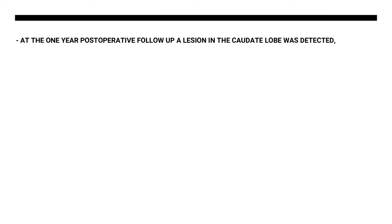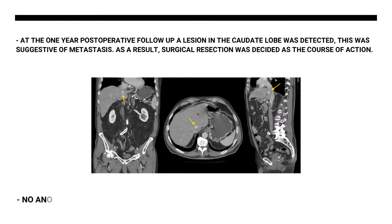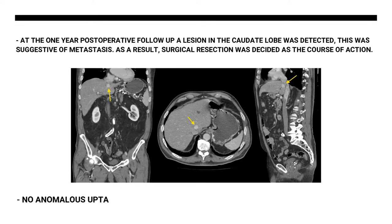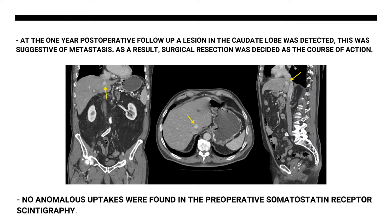At the one-year post-operative follow-up, a lesion in the caudate lobe was detected, suggestive of metastasis. Surgical intervention was decided as the course of action. No anomalous uptakes were found in the pre-operative somatostatin receptor scintigraphy.